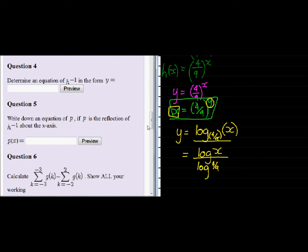So log of the interior divided by log of the base. Log of the interior, which is x, divided by log of the base, which is 4 over 9.